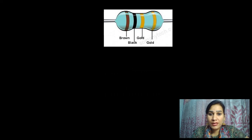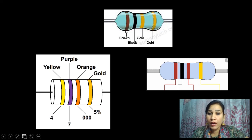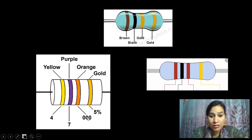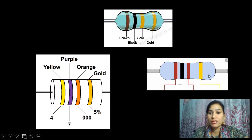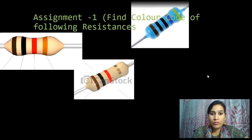These are some examples of resistances which show different colors. You can find out the value of these resistances. For example: yellow, purple, orange, golden. Yellow is 4, purple is 7, orange is the multiplier — means 10 raised to the power 3 — and golden is the tolerance of 5%. Similarly, we can find out the value of others also.